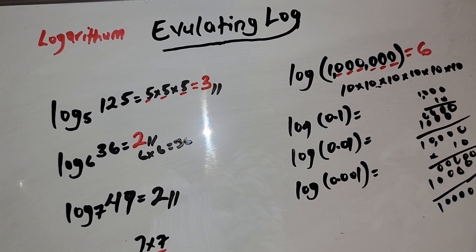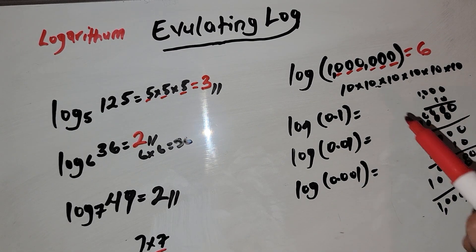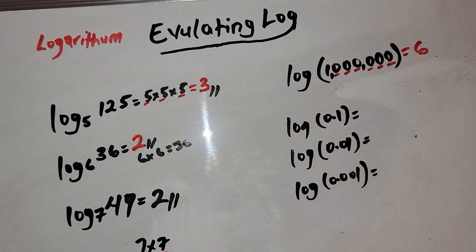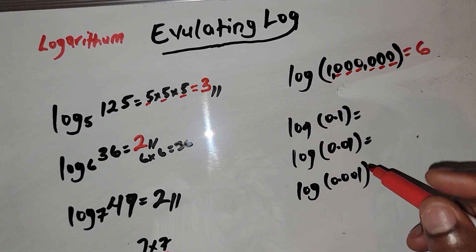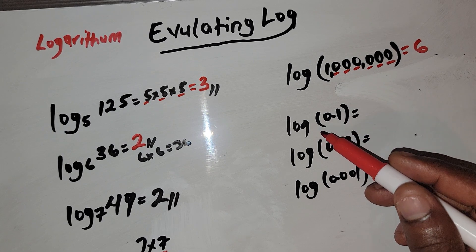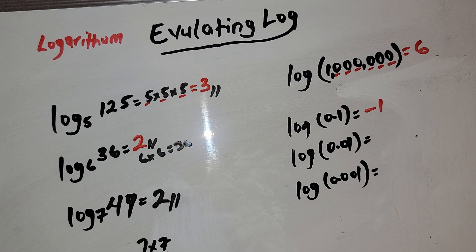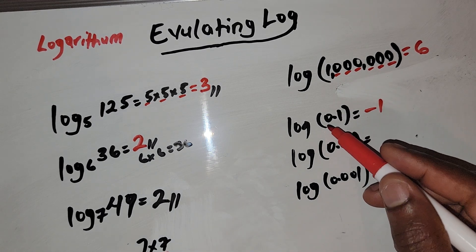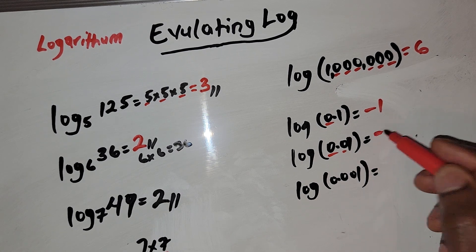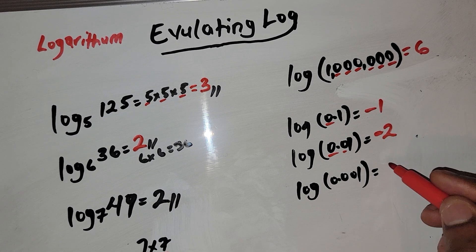So the answer is correct since 10 raised to the 6th power is equal to one million. Now if you see a problem with 0.1 — a decimal — that indicates a negative number. The number of zeros after the decimal point tells you the value. For 0.01 we have two zeros so the answer is negative 2, and for 0.001 we have three zeros so the answer is negative 3.